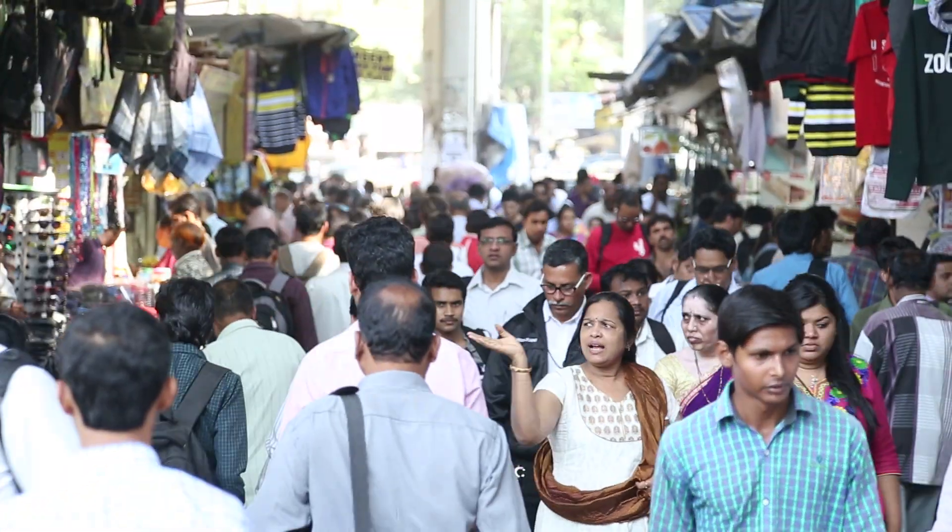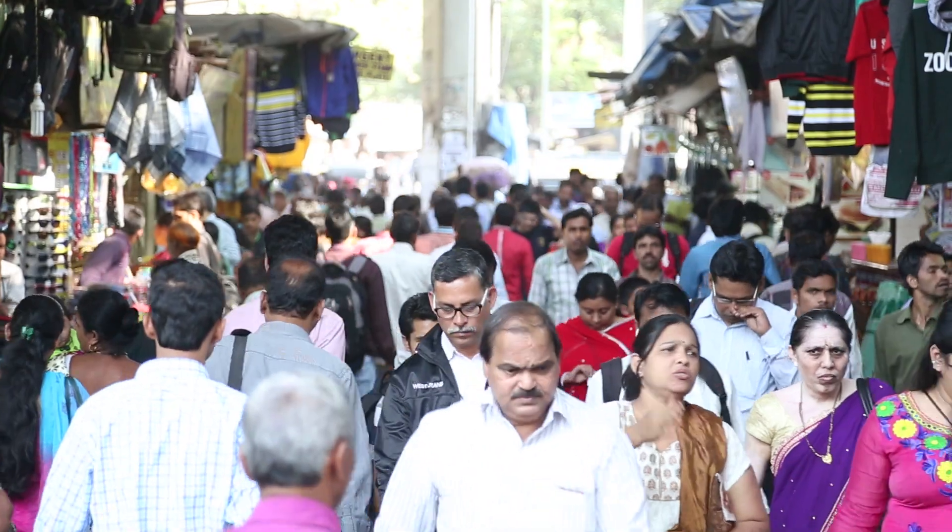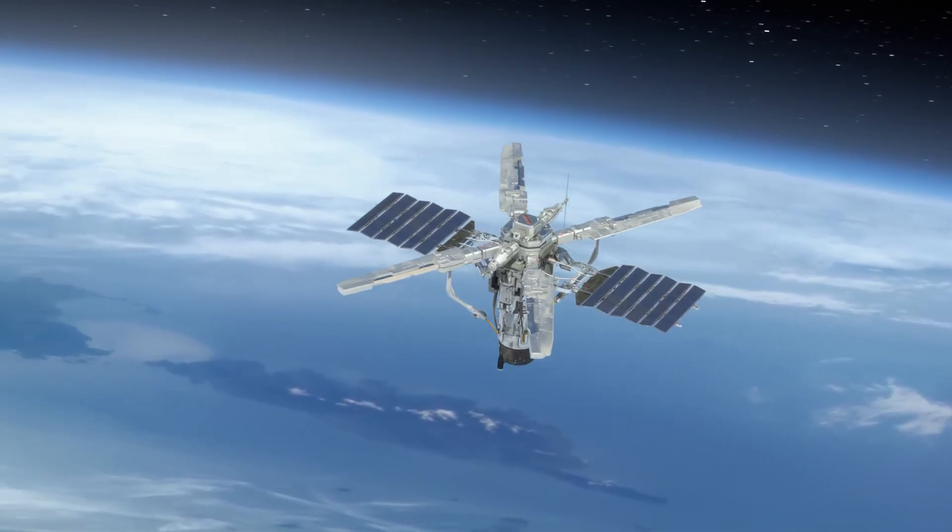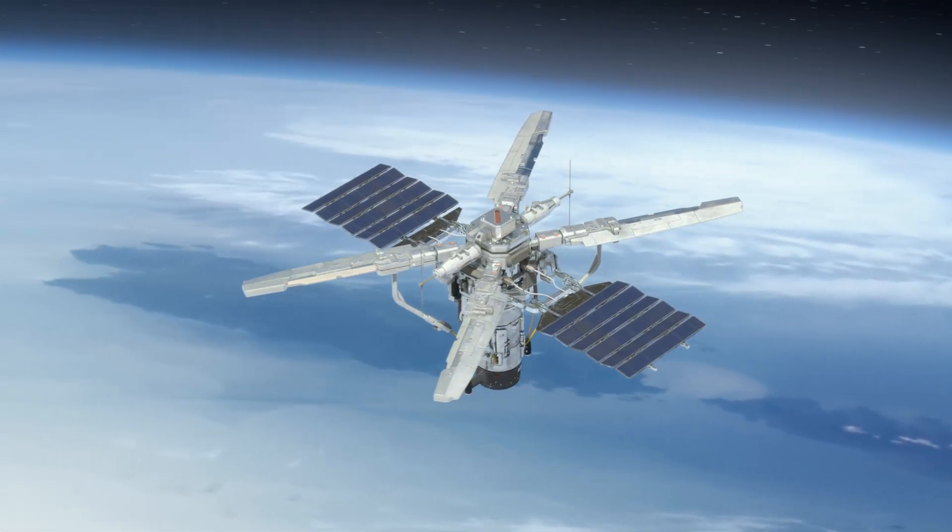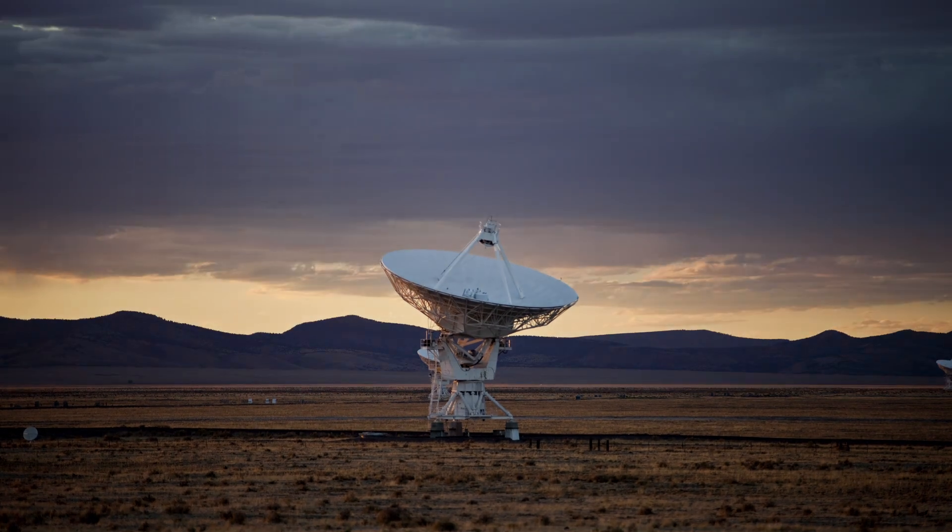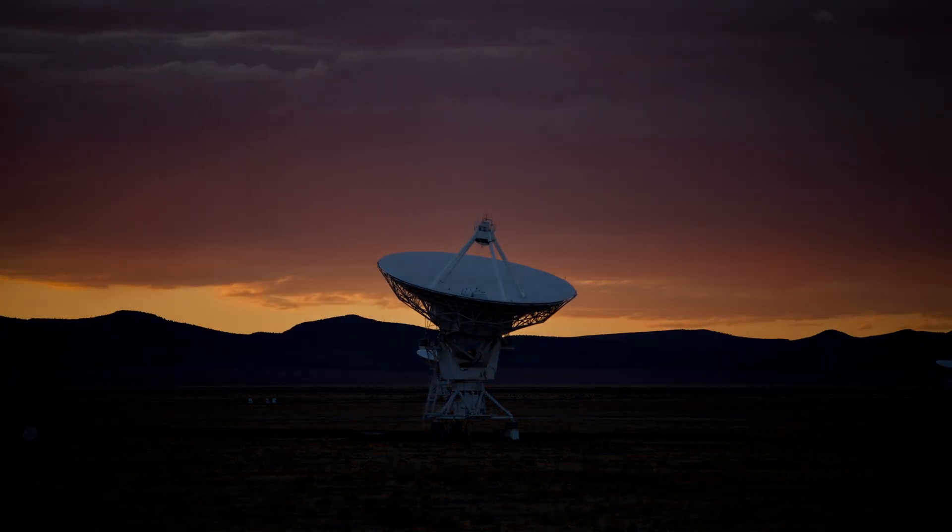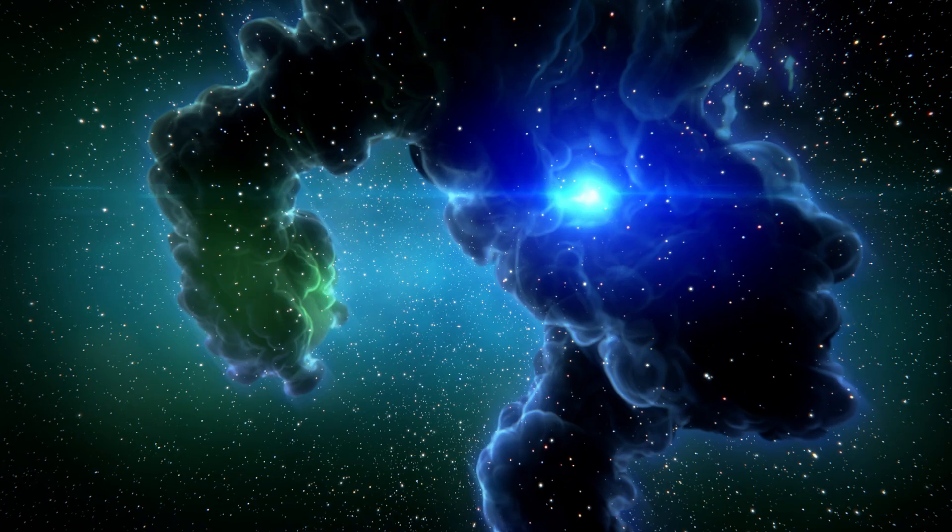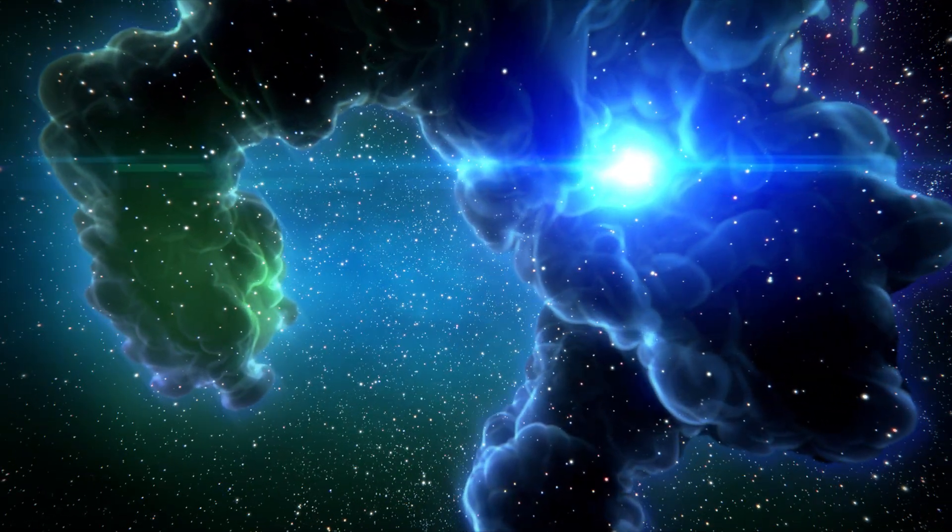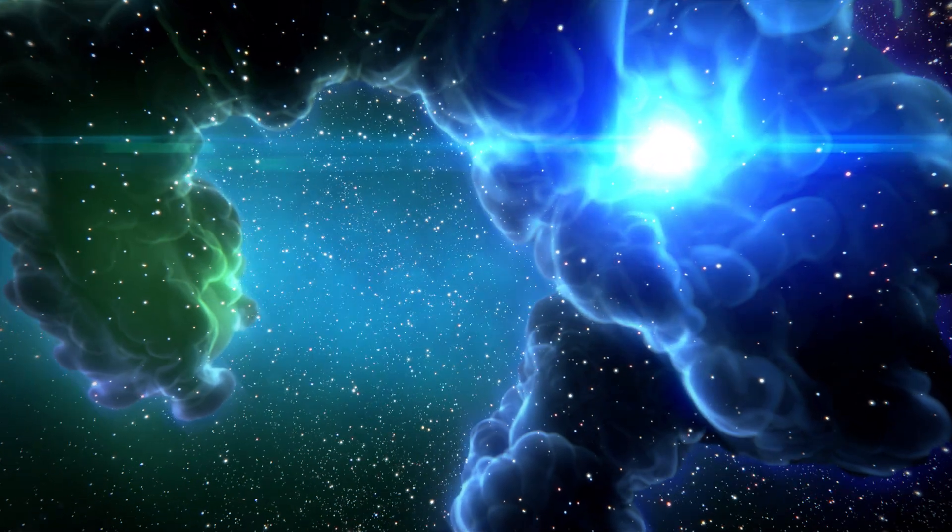Beyond these, the TOI 700d planet has captured the imaginations of many. Discovered by NASA's TESS, also known as the Transiting Exoplanet Survey satellite, it's the first Earth-sized planet in the habitable zone of a dwarf star. The potential for a Hycean environment on TESS is promising, especially given its size and location relative to its star.